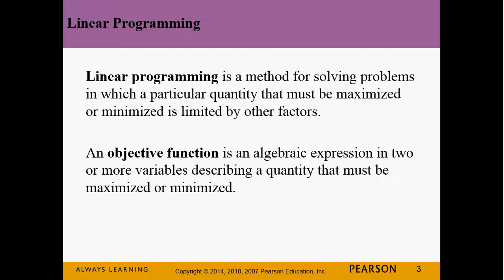The objective function is the algebraic expression of two variables describing a quantity that needs to be maximized or minimized. A prime example I always use is area, because area is length times width. A lot of times we want to maximize an area — say we've got a specific amount of fencing and we want to arrange that fencing in a square or rectangle such that we maximize the amount of grass enclosed. We can use linear programming to do that.